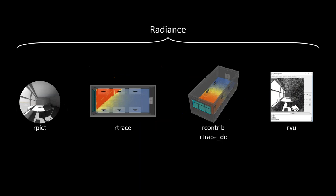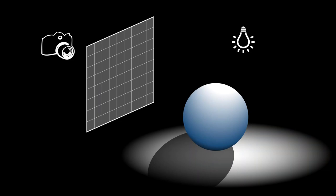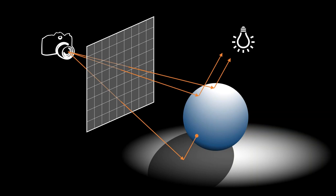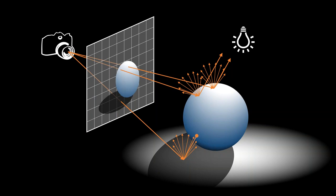Accelerad is based on Radiance, an open-source industry standard tool for daylighting simulations. Radiance includes programs such as rpict for rendering, rtrace for daylight sensor simulation, rcontrib and rtrace-DC for annual simulations, and rview as a graphical interface. All these tools use ray tracing: given a scene, rays are sent from a sensor through an image plane, and when a ray hits a surface, it tests for direct lighting and diffuse lighting, calculating a color for the hit point projected back onto the image plane.